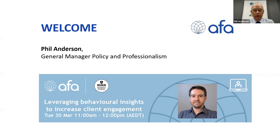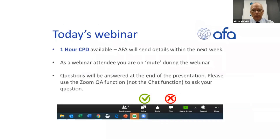In today's webinar, you'll learn how behavioural insights can be leveraged to redesign financial advice processes and to increase client engagement and retention. You'll be introduced to two key behavioural design frameworks which you can use to identify and mitigate frictions in the financial planning process and help design your conversations and business processes for behavioural changes. Before we begin, I'd just like to cover off some webinar housekeeping. As an attendee, you're on mute. We've allowed time at the end for questions — please use the Zoom QA feature, not the chat. Today's webinar will be recorded and available on demand from the AFA website. Campbell, thanks — let's kick off.